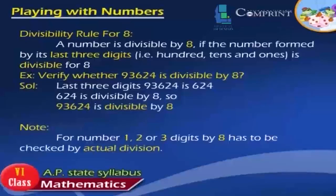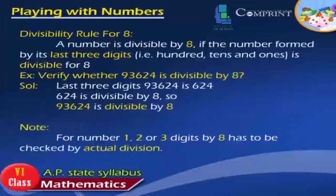Divisibility Rule for 8: A number is divisible by 8 if the number formed by its last three digits is divisible by 8. Example: Verify whether 93,624 is divisible by 8. The last three digits are 624, and 624 is divisible by 8, so 93,624 is divisible by 8. Note: For 1, 2, or 3-digit numbers, divisibility by 8 must be checked by actual division.